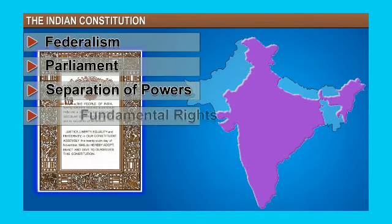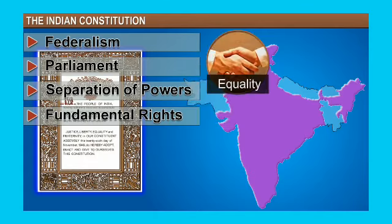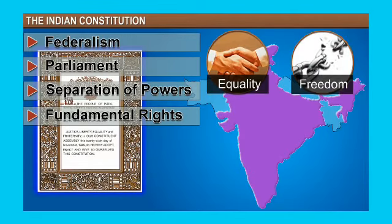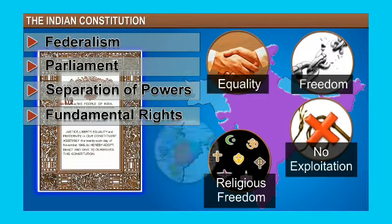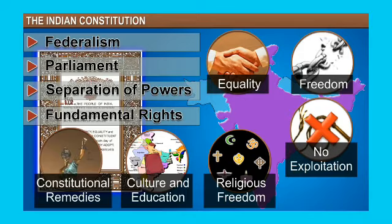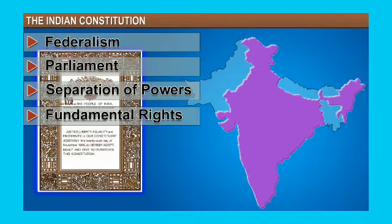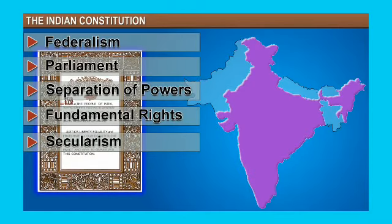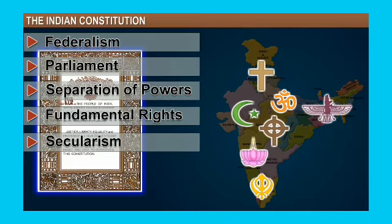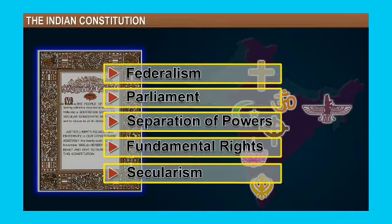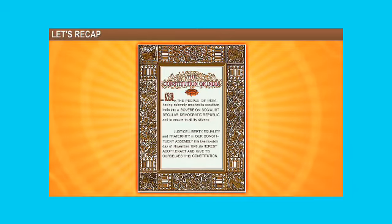Next is fundamental rights. We have six fundamental rights: right to equality, right to freedom, right against exploitation, right to freedom of religion, cultural and educational rights, and right to constitutional remedies. Regarding secularism, it means the state does not promote any one religion. All religions are equal and the government should not give priority to any specific religion.